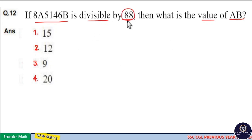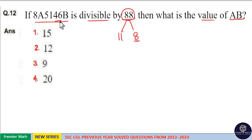Here, when a number is divisible by 88, it should be divisible by both 11 and 8. And when a number is divisible by 8, its last 3 digits should be divisible by 8.